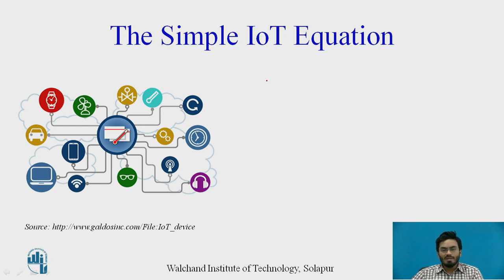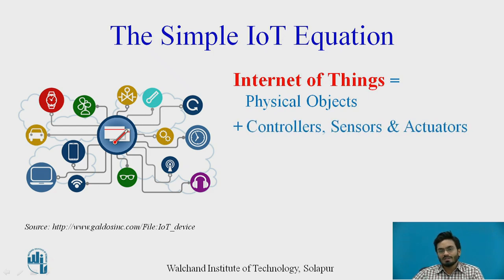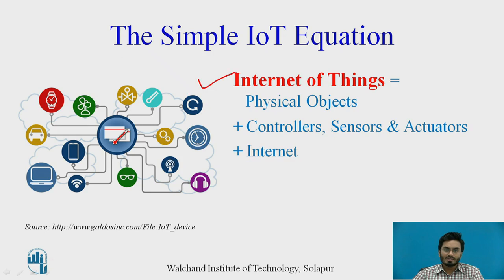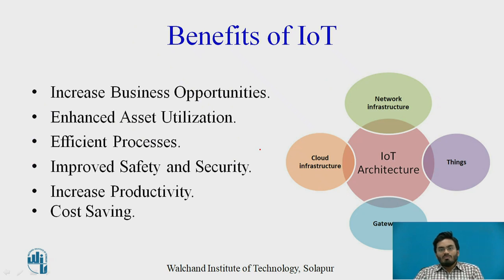Based on this architecture, we can write a simple equation: Internet of Things equals physical objects plus controllers, sensors, and actuators — which decide when to connect to the Internet and what data to send — plus the Internet itself. IoT is a composition of physical objects, sensors embedded with controllers running firmware, actuators making decisions, and ultimately the Internet.